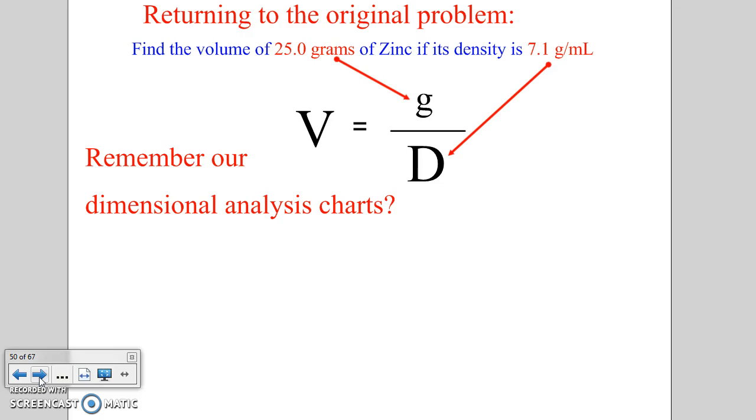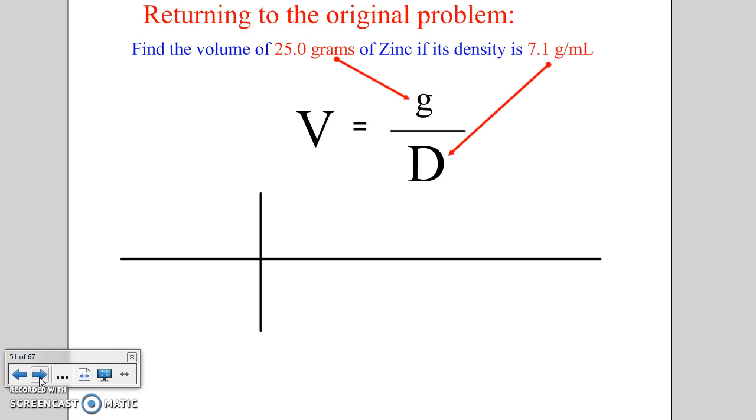We're going to plug those things into the appropriate place. We're going to take g divided by D, but we have units, so remember our dimensional analysis charts? We're going to start with a big dimensional analysis chart, and we're going to put the things that we want to divide by on the bottom and the other things on the top. The g goes on the top: 25.0 grams, just like that. The 7.1 grams per milliliter goes in the bottom, but there's that slash in the bottom. We do not want slashes in the bottom. The horizontal line is our slash, so we want g on the bottom, and ml is going to go on the top.